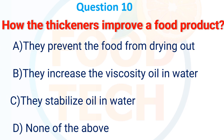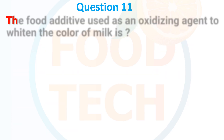How does a thickener improve the food product? A. They prevent the food from drying out, B. They increase the viscosity of oil in water, C. They stabilize the oil in water, D. None of the above. The answer is B. They increase the viscosity of oil in water.